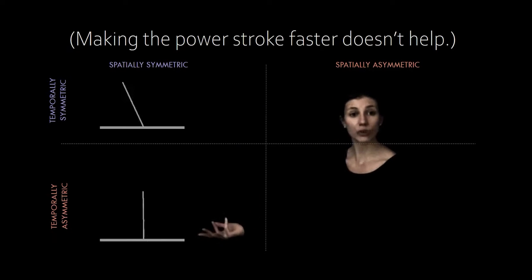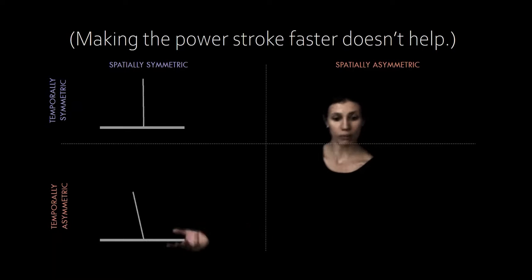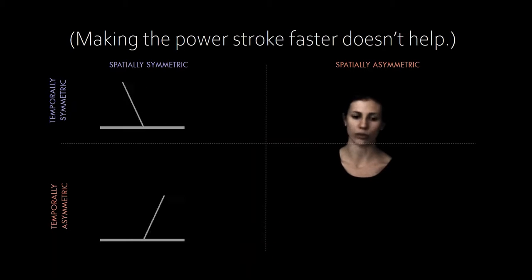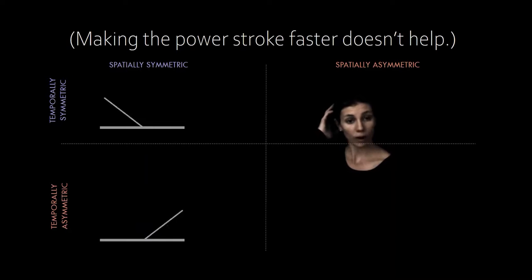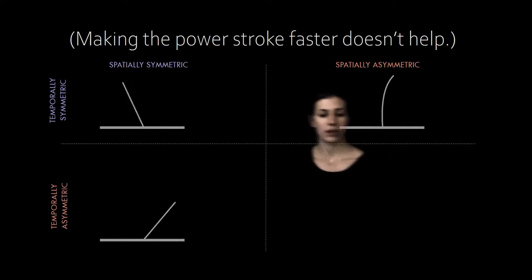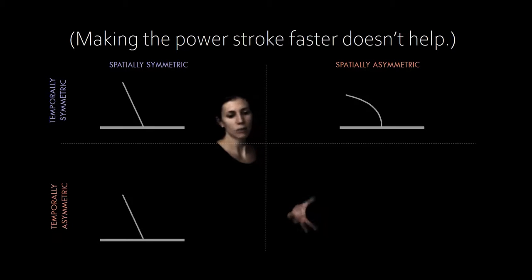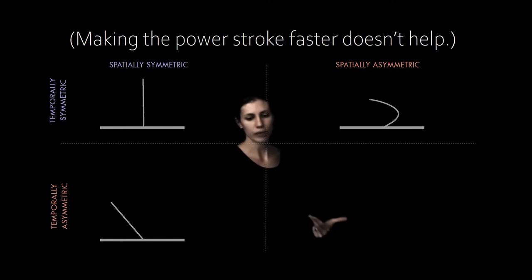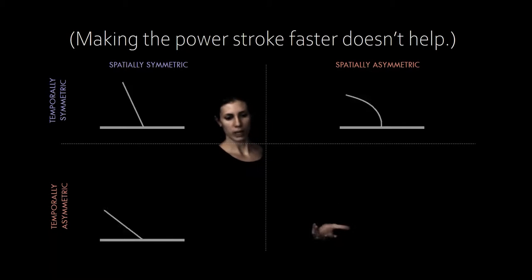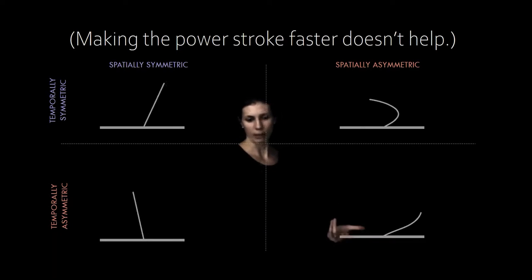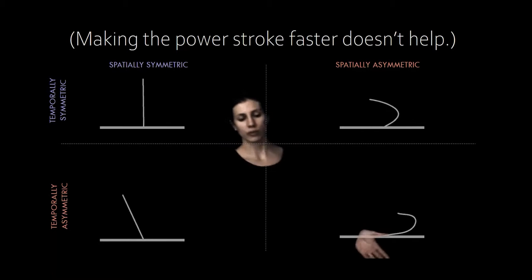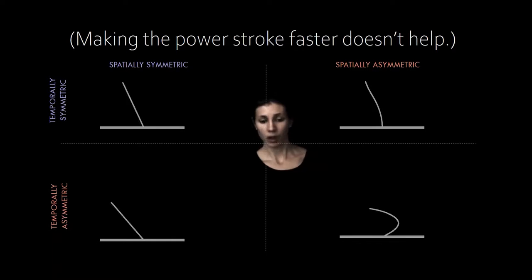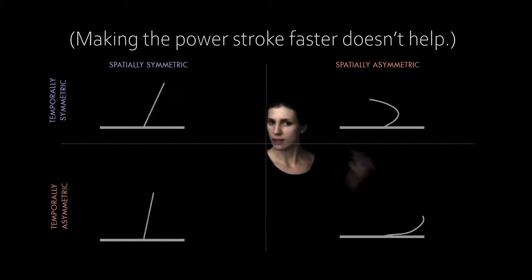The goal here is net fluid displacement to either move yourself, that is to swim, or to pump fluid across a surface for feeding or ventilation or waste clearance. But as long as we're in this low Reynolds number viscous dominated scenario, we're going to need spatial asymmetry. We can introduce temporal asymmetry by making the power stroke faster than the recovery stroke, but that won't make a difference in the net fluid displacement as long as we're at low Reynolds number.